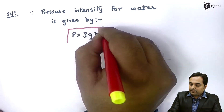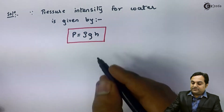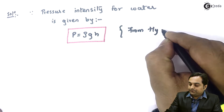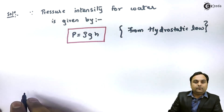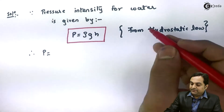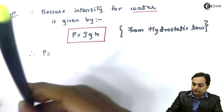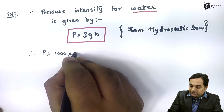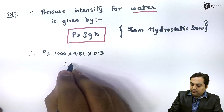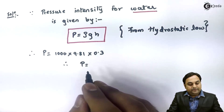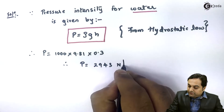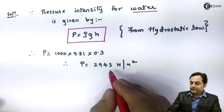Since we are finding pressure intensity for water, density of water is 1000, G is 9.81, and the height of the column is 0.3. Calculating this gives the first answer: pressure intensity is 2943 Newton per meter square.